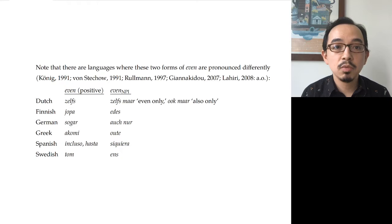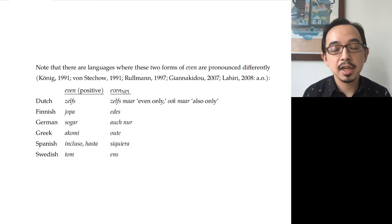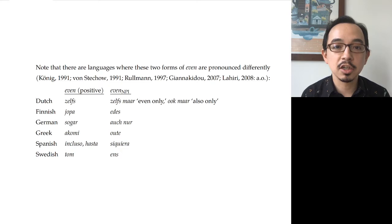As part of this argument, cross-linguistically we note that there are many languages where these two forms of even with roughly this distribution are actually different items. Here's a quick table from a number of European languages from this literature. We could compile a longer table, although this is not directly an argument that this is the right theory for any particular language.